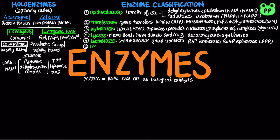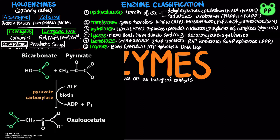Ligases catalyze bond formation coupled to ATP hydrolysis, including DNA ligase involved in DNA replication and repair, various carboxylases such as pyruvate carboxylase, which catalyzes the condensation of pyruvate and carbon dioxide or bicarbonate ion to form oxaloacetate, and various synthetases such as aminoacyl-tRNA synthetase that catalyzes the condensation between amino acid and tRNA during translation.